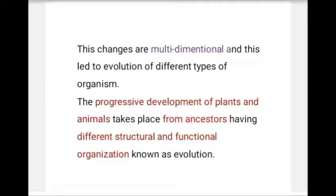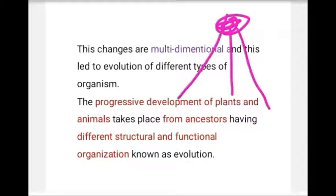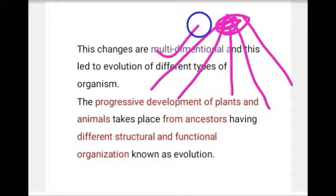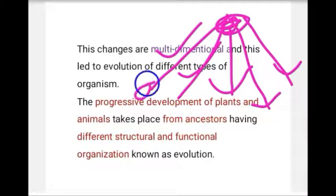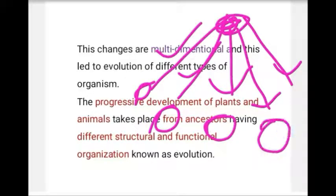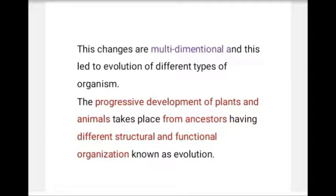This entire process involved progressive development in plants and animals from a common ancestor. From one ancestor, progressive development occurred, and during that development, functional differences and structural differences appeared. This resulted in the formation of a new organism with a new functional organization. So evolution means that from a common ancestor, if changes occur in function, structure, and morphology, a new organism forms.